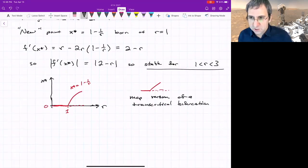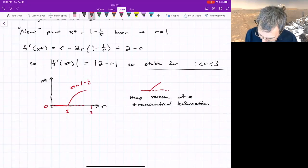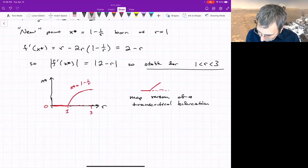There are map versions of all the bifurcations we talked about for 1D ODEs. There are analogs for maps, and then some. There's new things that maps can do. So this goes all the way up to 3, and then something new happens. This point seems to go unstable. Maybe we have a new transcritical bifurcation. Let's look at r=3.